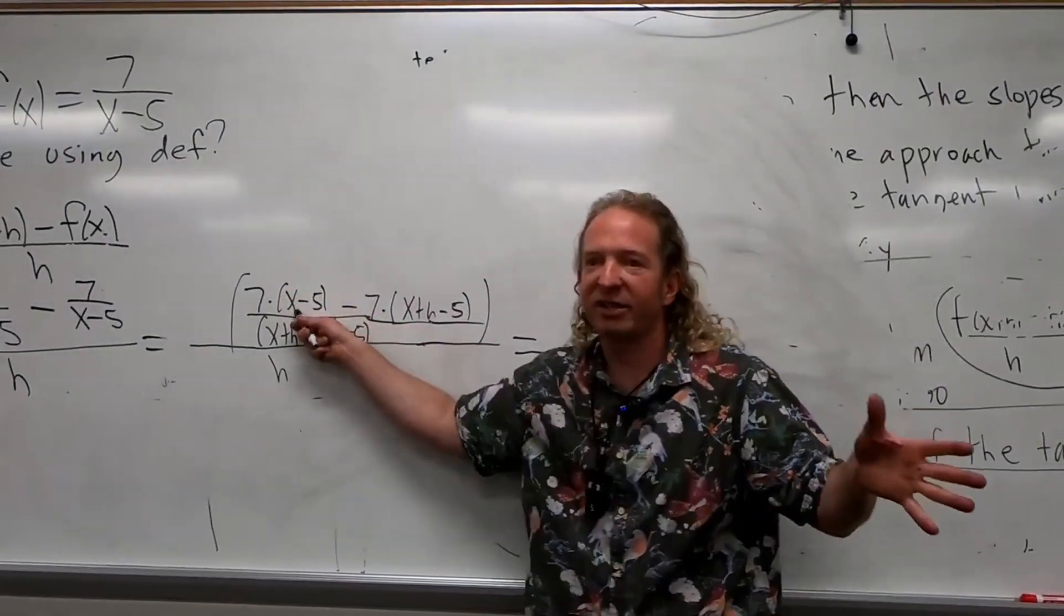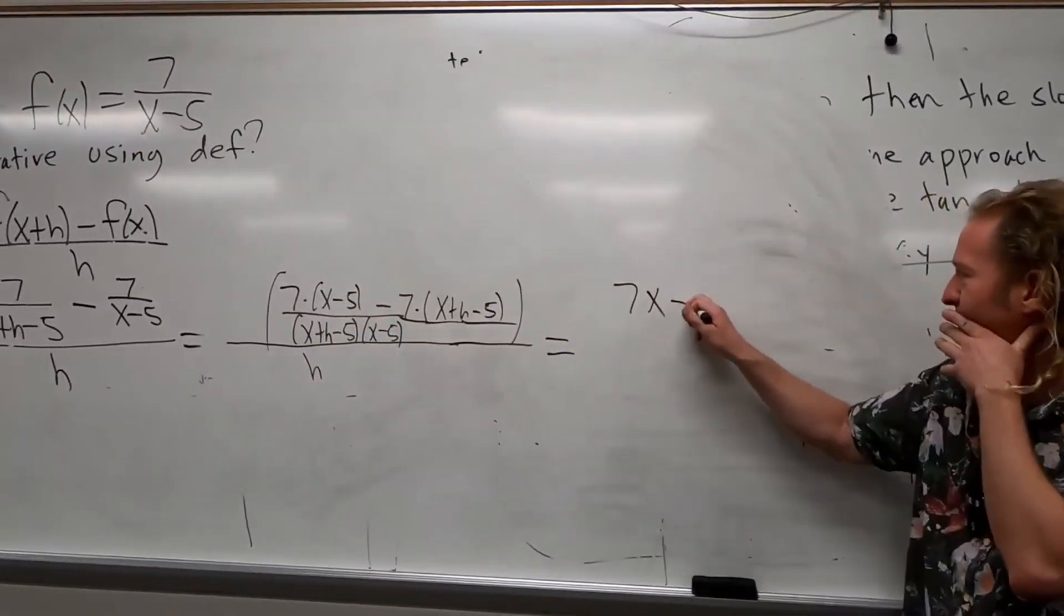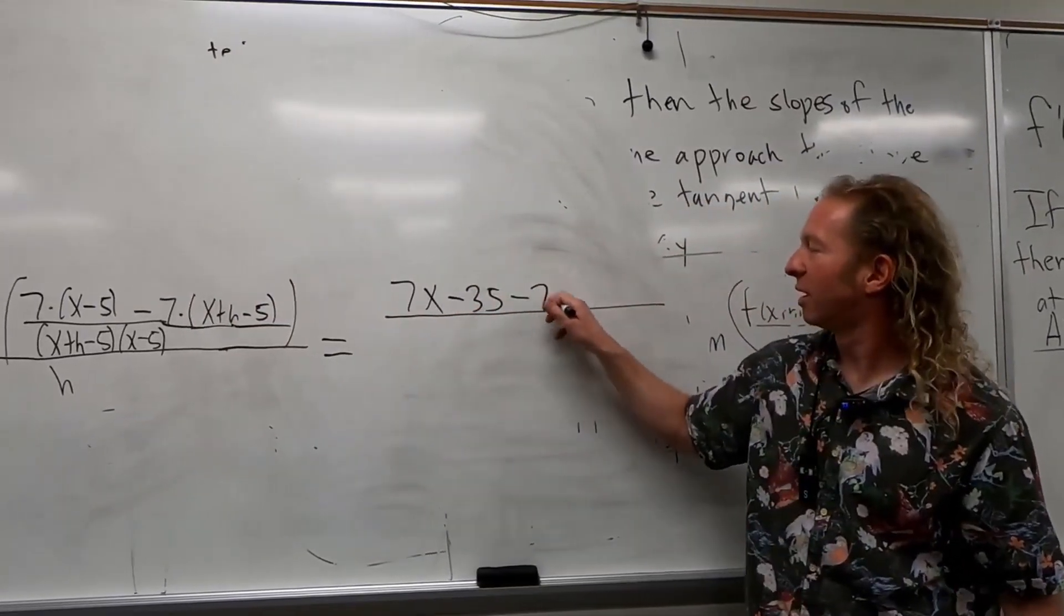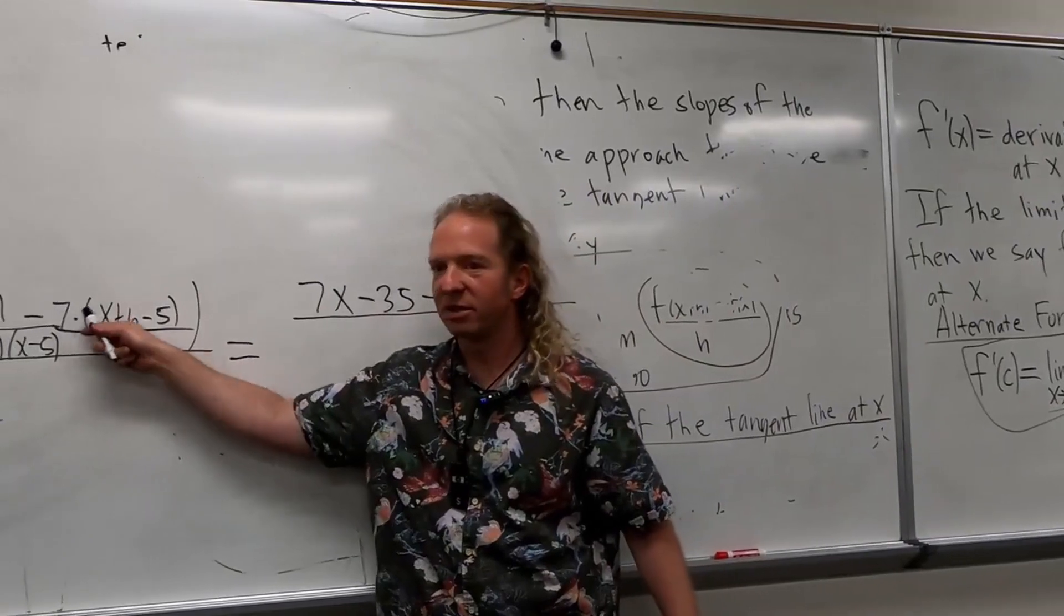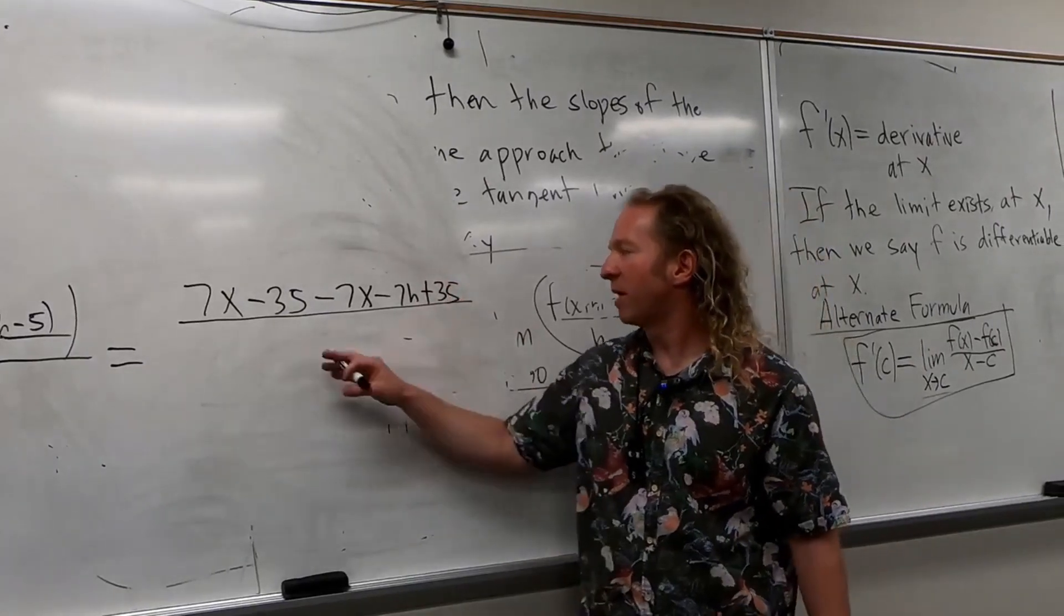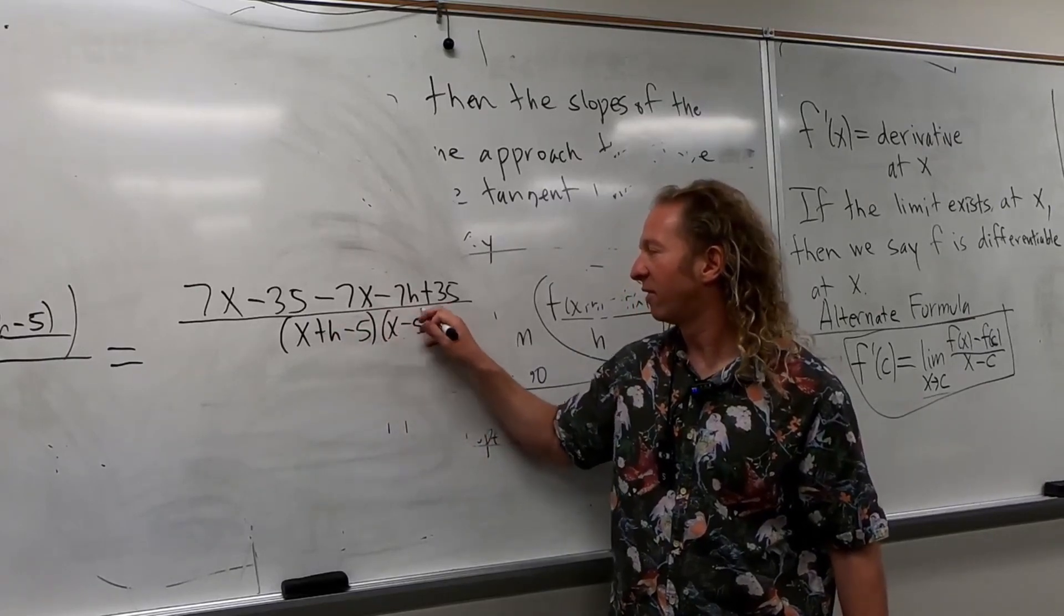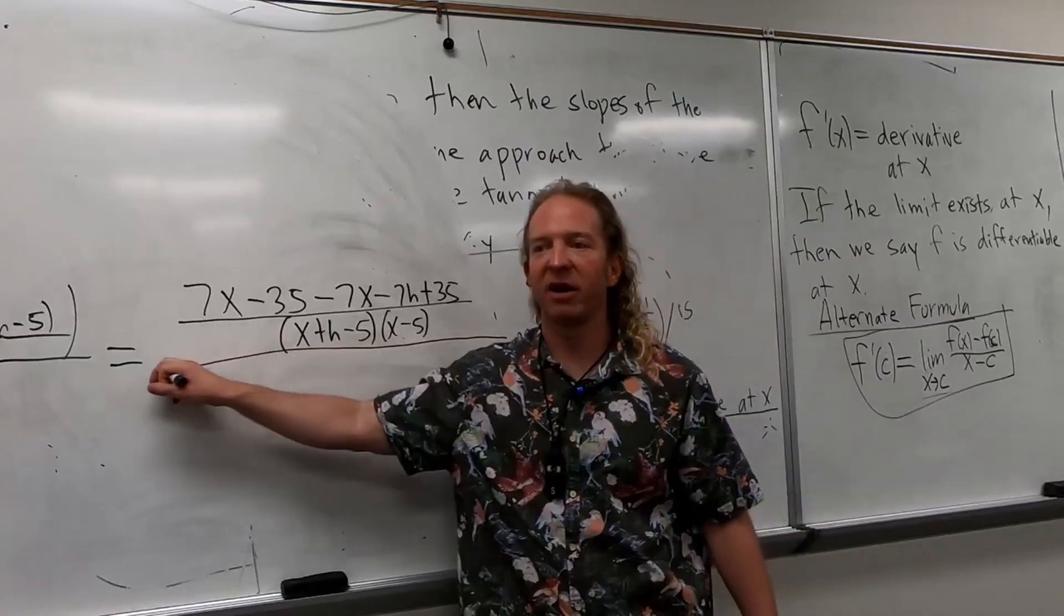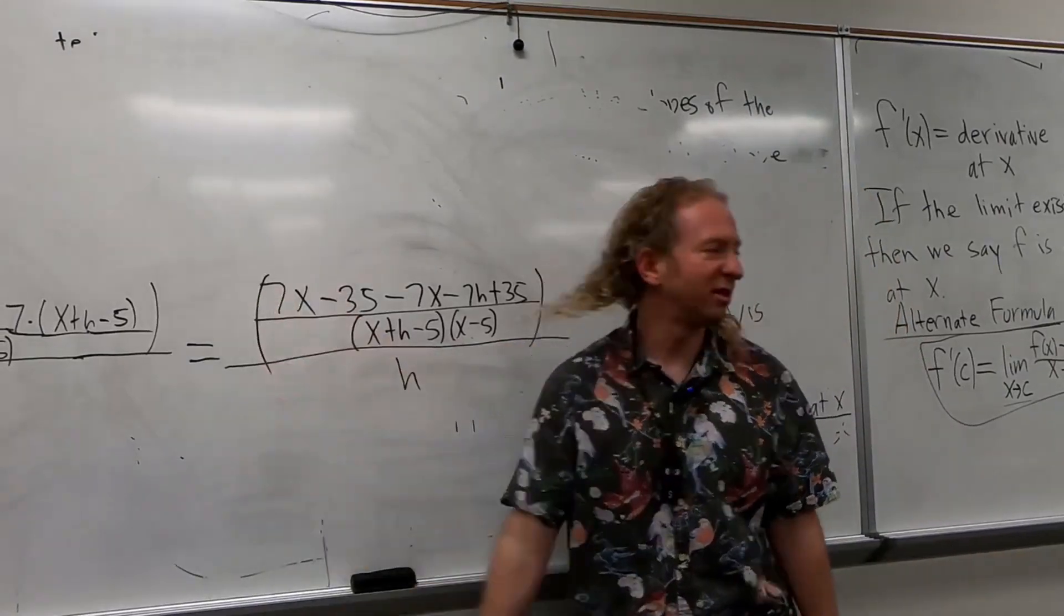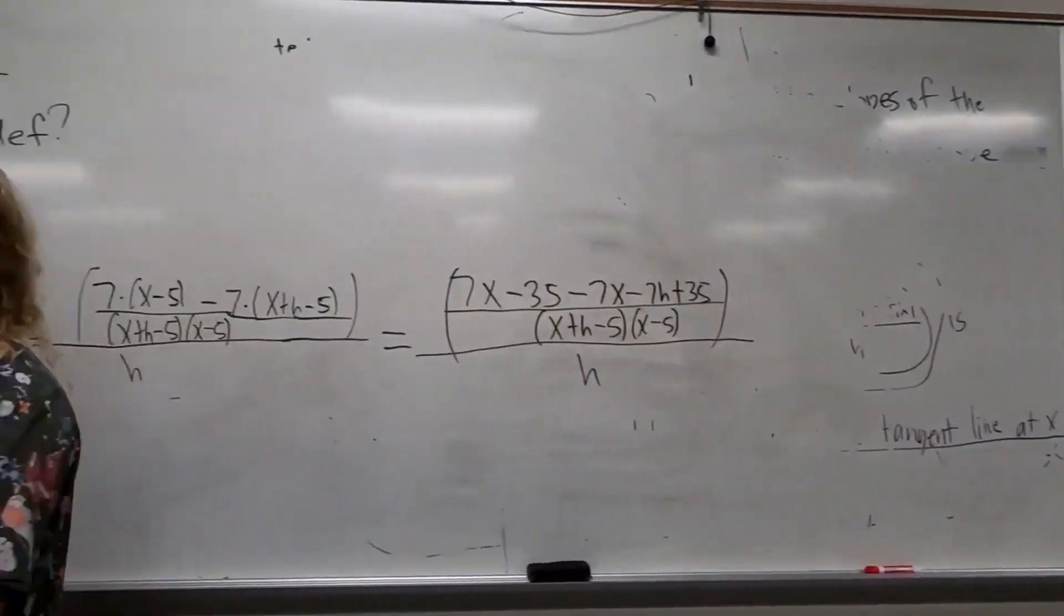This is going to be seven x. So, seven x minus 35, and then minus seven x minus seven h plus 35. And then the bottom, we have x plus h minus five, x minus five, and then it's all being divided by h, by h. It's all over h, and then parentheses.